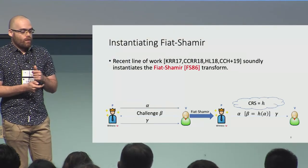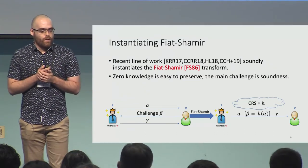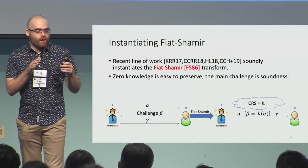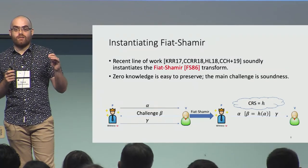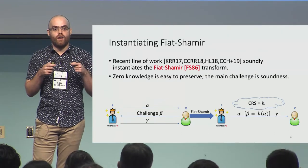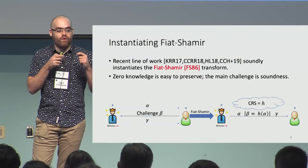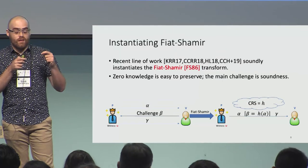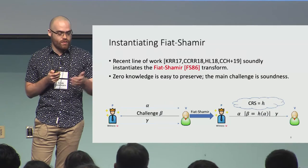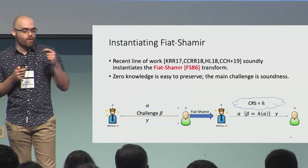For this transformed protocol, showing zero-knowledge is easy, but the main challenge is showing that it preserves soundness. This is because the prover has offline access to the hash function and can try different alphas to find one that hashes in a fortunate way, allowing it to successfully complete a proof for a wrong statement.